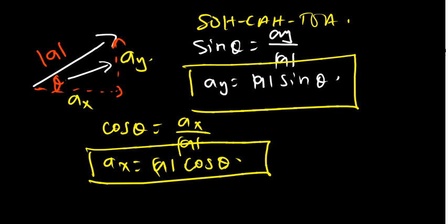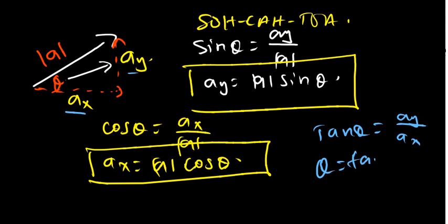What if we want to find the angle of that vector? We are going to use tan. We know AX and AY, so tan theta equals opposite over adjacent, which is AY divided by AX. Therefore the angle equals tan inverse of AY divided by AX.